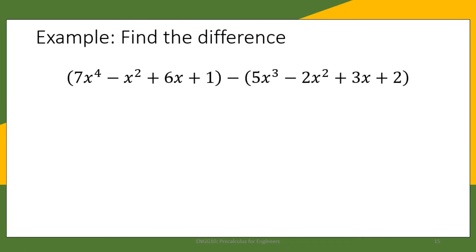Let us now subtract polynomials. We have 7x raised to 4 minus x squared plus 6x plus 1, minus the polynomial 5x cubed minus 2x squared plus 3x plus 2. Subtraction is slightly different from addition. The key point is that since we are subtracting, we need to distribute the minus sign to all the terms in the second polynomial.